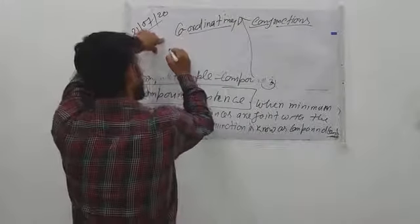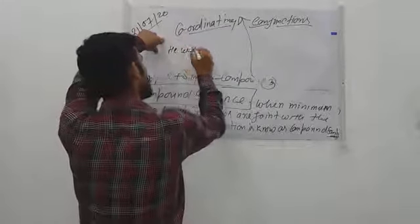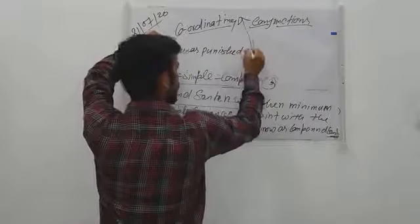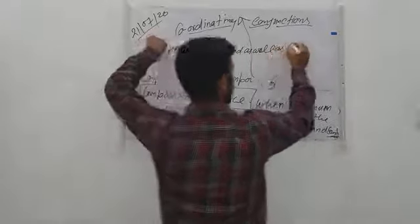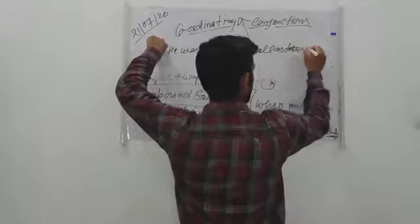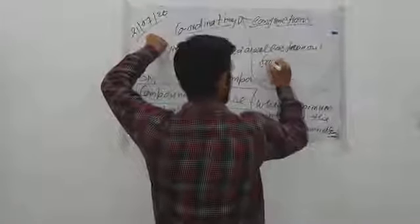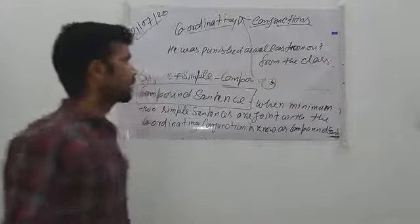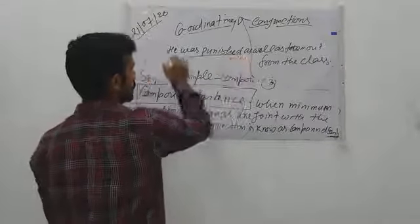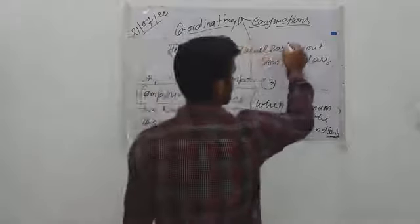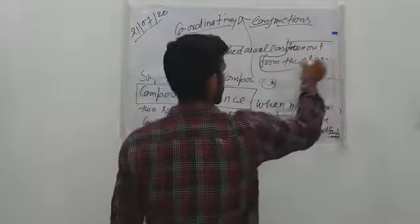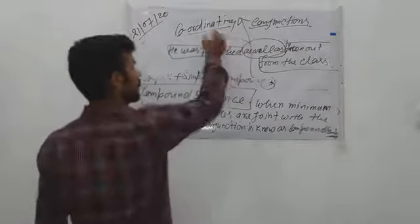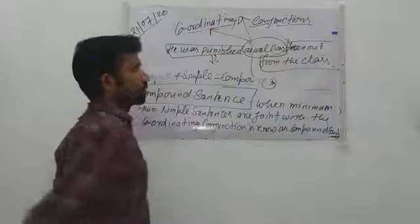For example: 'He was punished as well as taken out from the class.' Here, the first part is a simple sentence and the second part is also a simple sentence. These two simple sentences are joined with the coordinating conjunction, so this is a compound sentence.